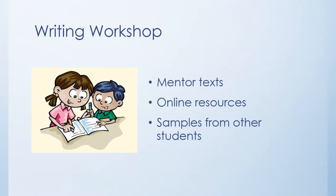During writing workshop, we use mentor texts. A mentor text is a text the teacher uses to teach a writing skill. It can be a picture book, a paragraph from a novel, an article from a magazine, or the teacher's own writing. We look at how an author has used the skill in his or her writing and try it in our own writing. We also use online resources to help students during writing workshop. Students may use the computer to research or type, and we show students samples of writing done by other students in the same grade so they can see how kids have applied some of the same writing skills.